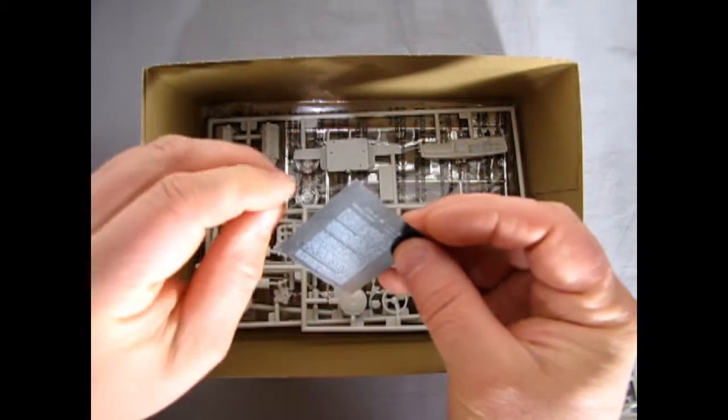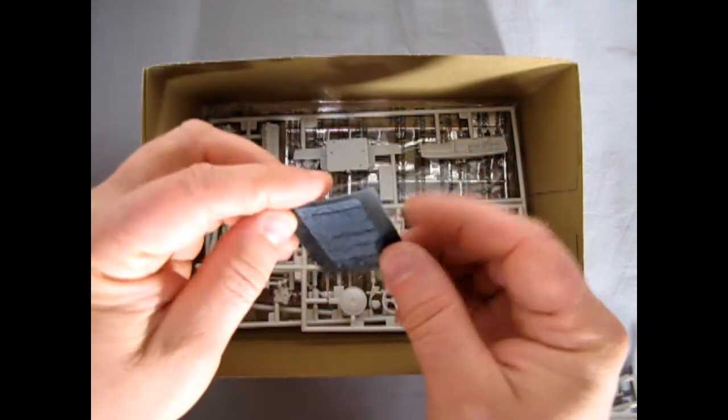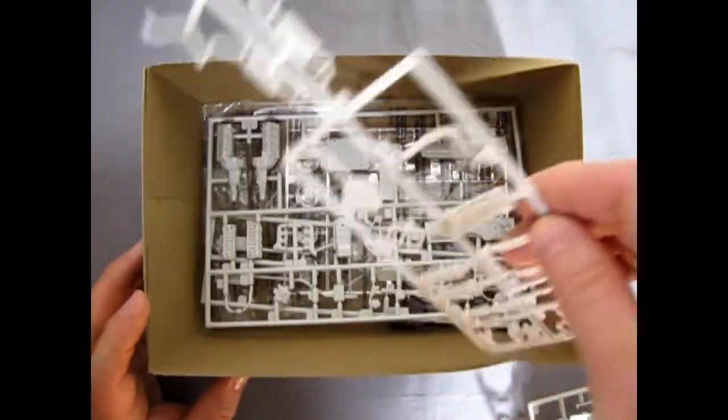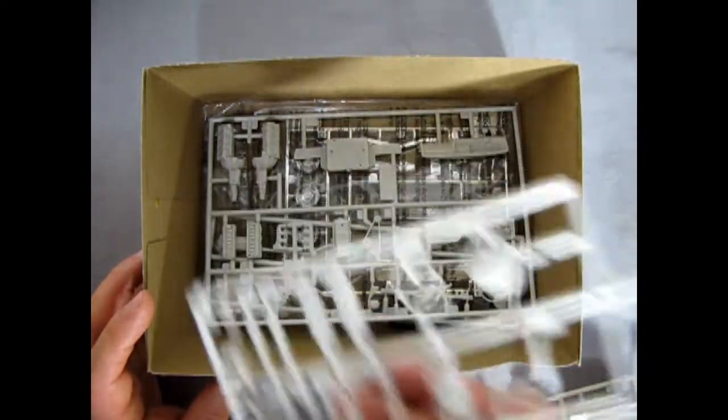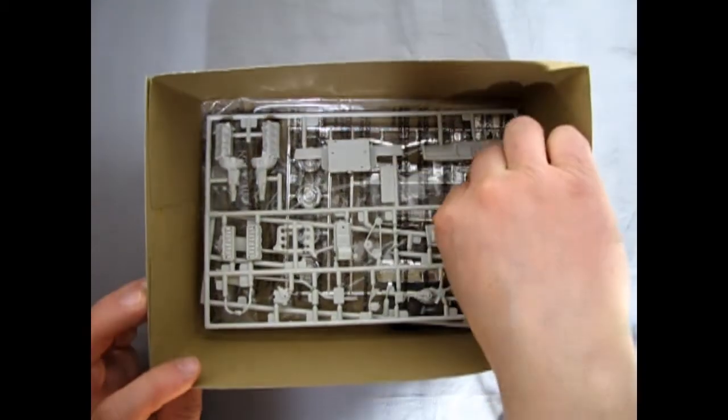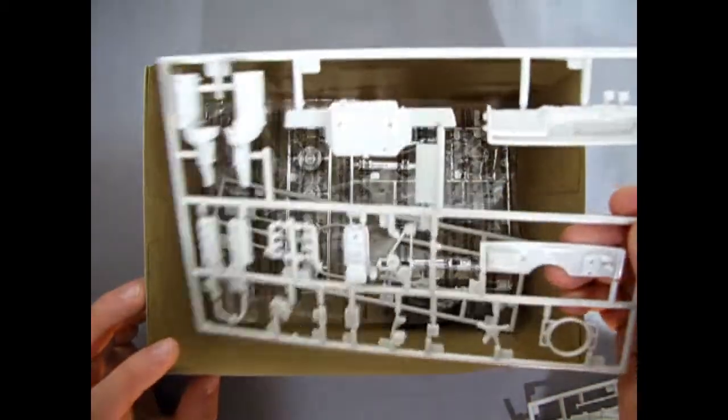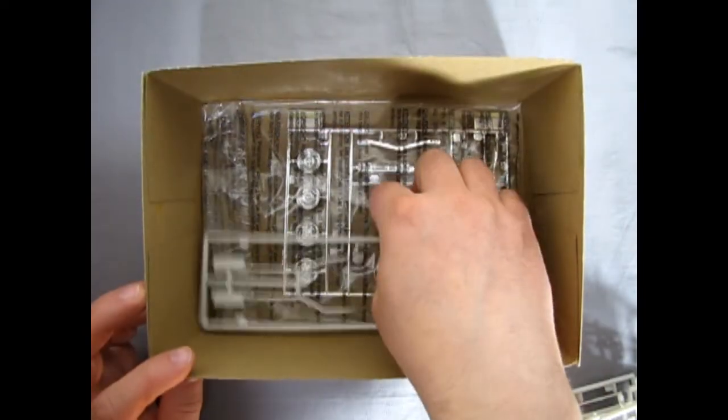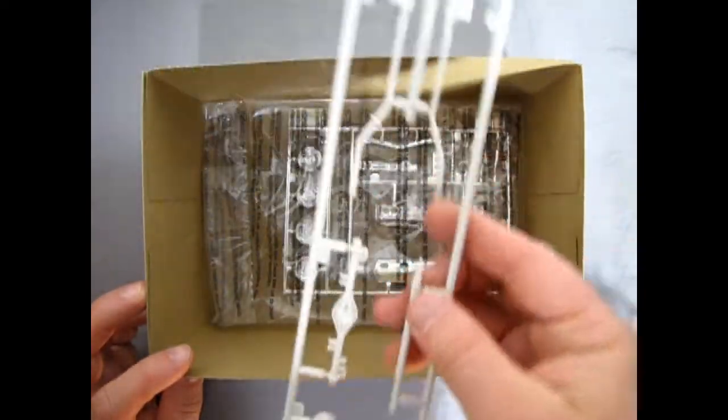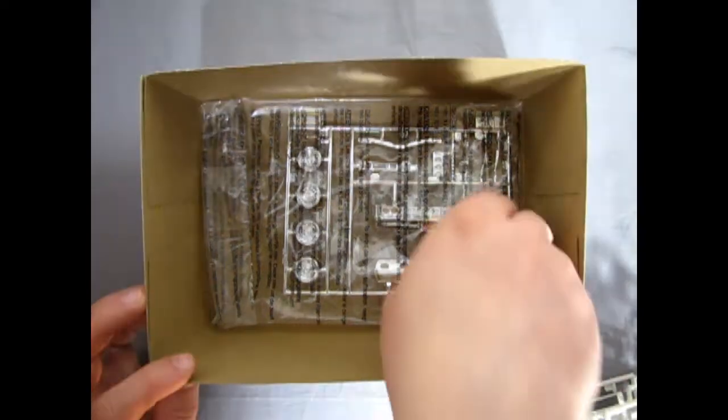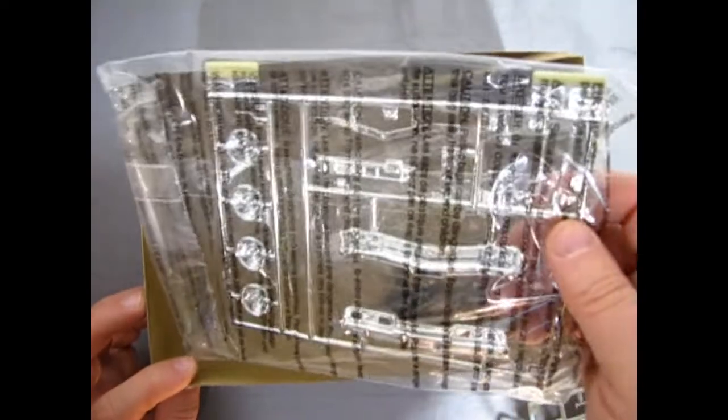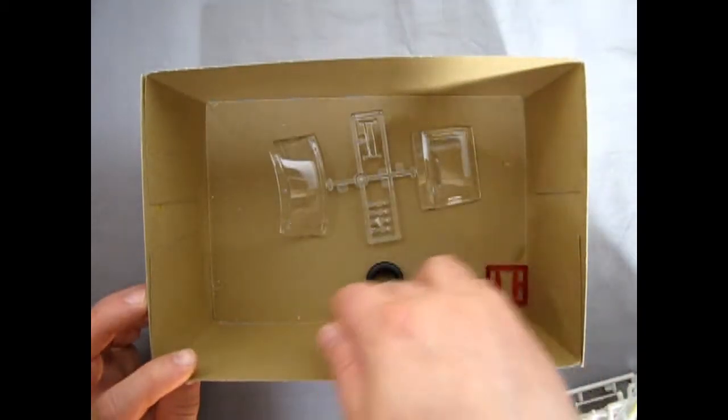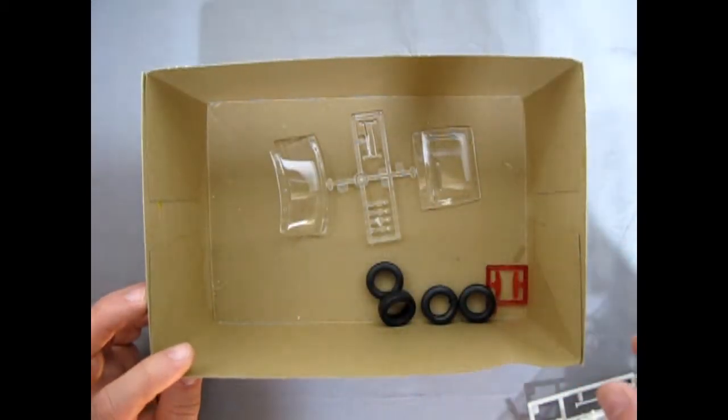Decal sheet. Interesting I never seen a decal sheet black on the back. And then we've got engine components, more engine components and firewalls and dashboard and all that kind of goodness. Exhaust pipes, the chrome, the glass, tires and rear taillights.